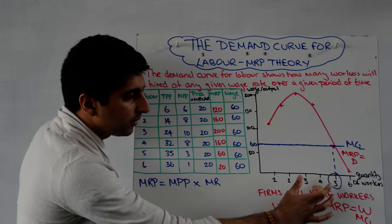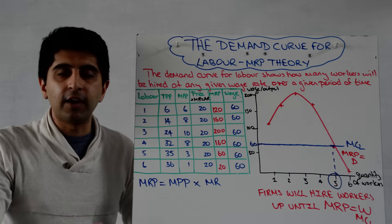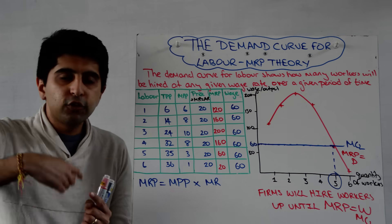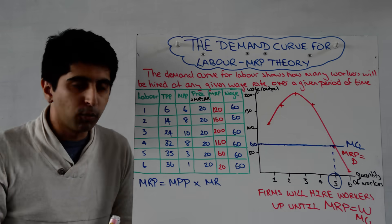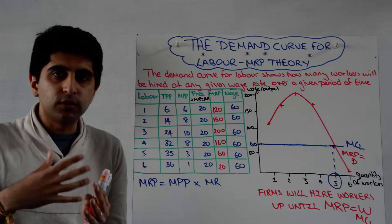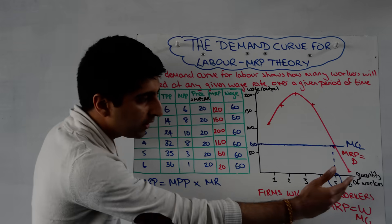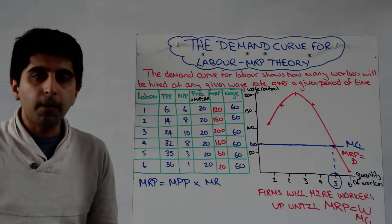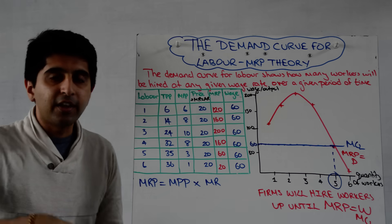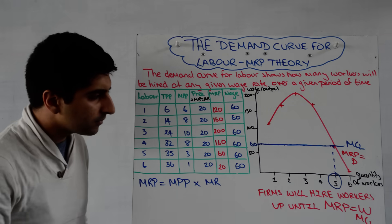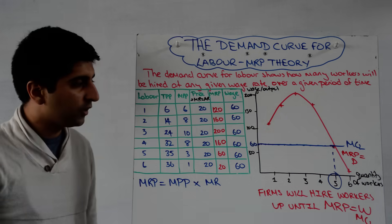What about employing fewer than five workers at a wage rate of £60? That makes no sense either, because all those workers are bringing in more revenue than they cost — revenue is higher than cost. By hiring another worker, the firm can actually bring in more revenue than cost, maximising its benefit by hiring more workers up until where MRP equals the marginal cost of labour. That's the efficient employment condition: keep hiring workers until MRP equals the wage, i.e., equals the marginal cost of labour.